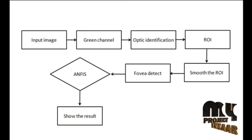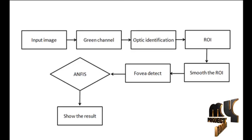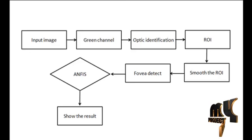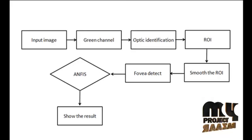ANFIS uses either back propagation or combination of least square estimation and back propagation for membership function parameter estimation. In fuzzy system, it will classify the feature by using some several rules. Those rules will help to classify the data as normal or severe type or moderate type.